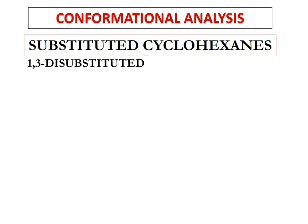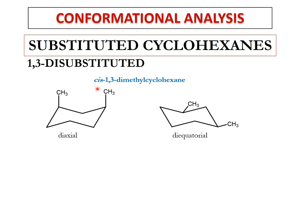For cis-1,3-dimethylcyclohexane, both CH₃ groups are axially oriented at positions one and three. Axial groups at 1,3 positions are on the same side of the ring, so this is a diaxial conformation. When the ring flips, both axial groups become equatorially oriented. Energy-wise, this diequatorial orientation of cis-1,3-dimethylcyclohexane is more stable than the diaxial conformation, so the molecule predominantly exists with both CH₃ groups equatorially oriented.